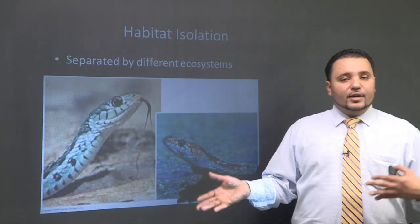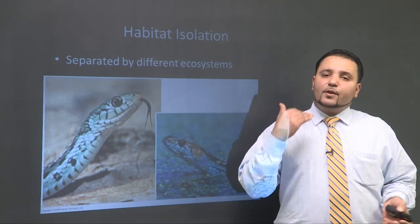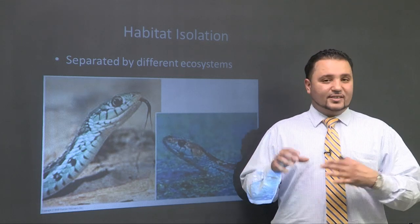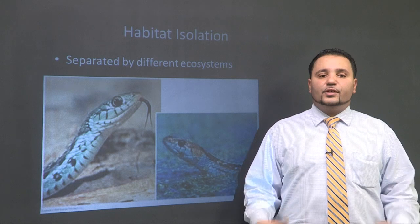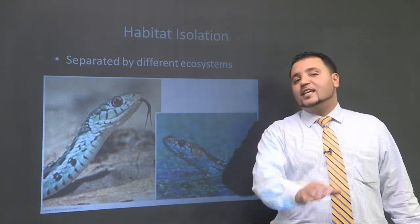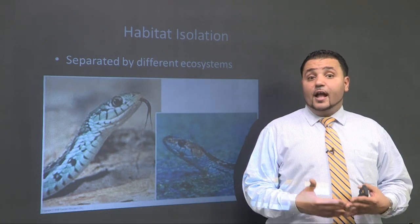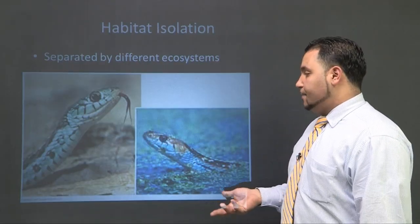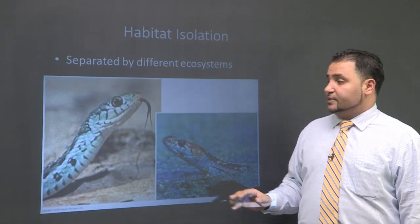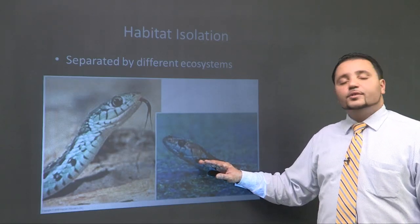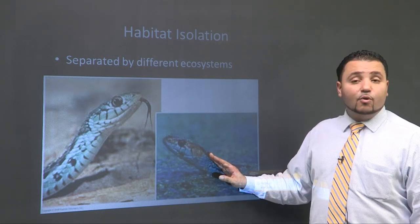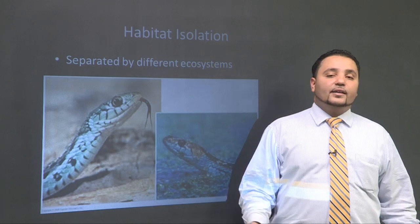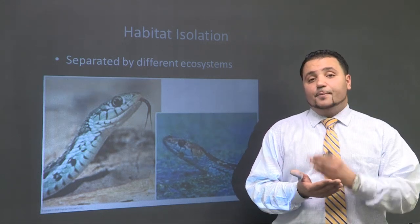Habitat isolation is the first and most common type of reproductive barrier. For example, lions mostly come from Africa and tigers mostly come from India or Southeast Asia. The two giant cats will never mate with each other because they have a huge ocean separating them — that's habitat isolation. They're separated by different ecosystems. Similarly, two species that were once one species slowly broke down and lived in different habitats: one always lives in the water while the other lives on land. Because they're in different habitats, they'll probably never meet and they'll never mate.